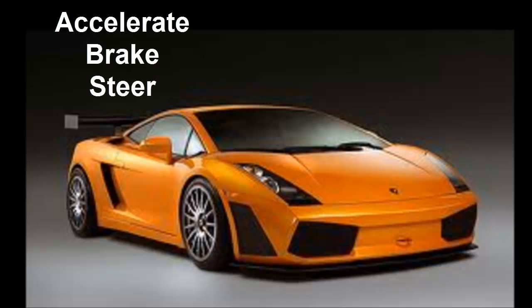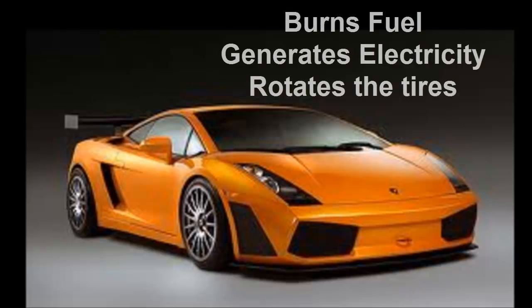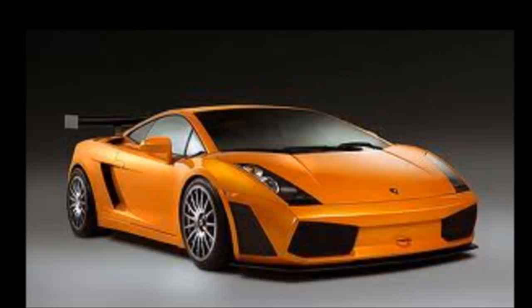For example, to drive a car we need to know how to accelerate, brake, and steer. The car does not have to tell us how it burns the fuel, generates electricity, and rotates the tires. That information is hidden from the driver when all he wants to do is drive to a destination.